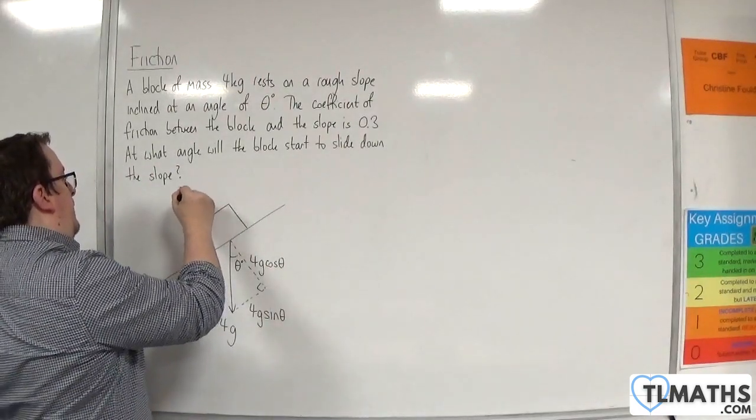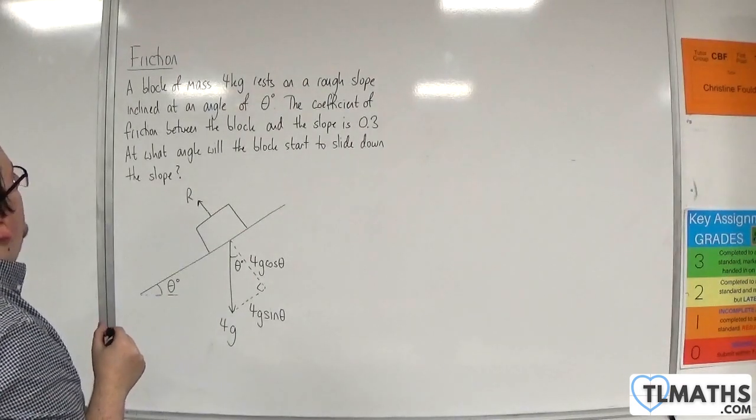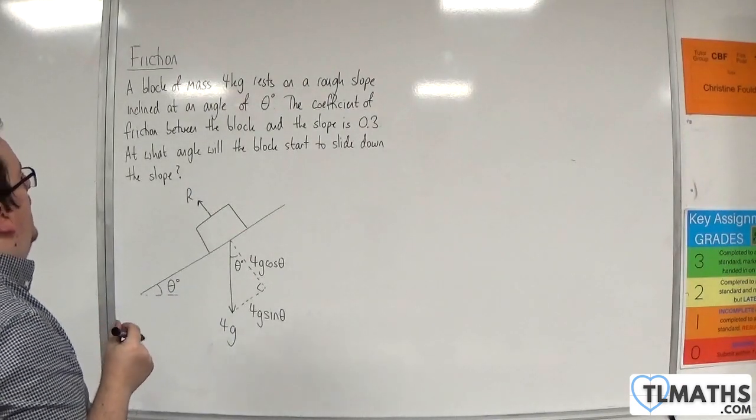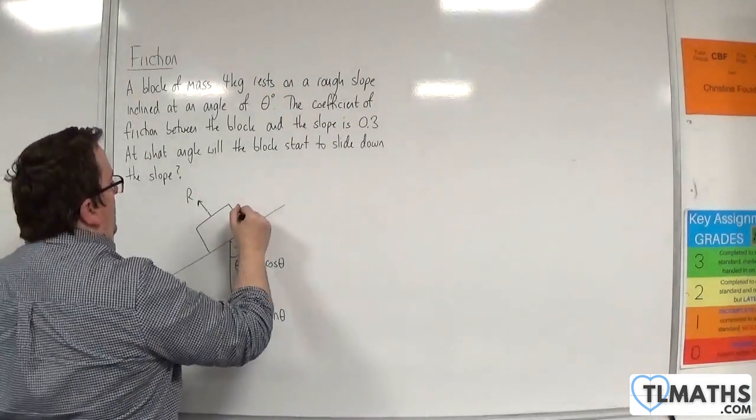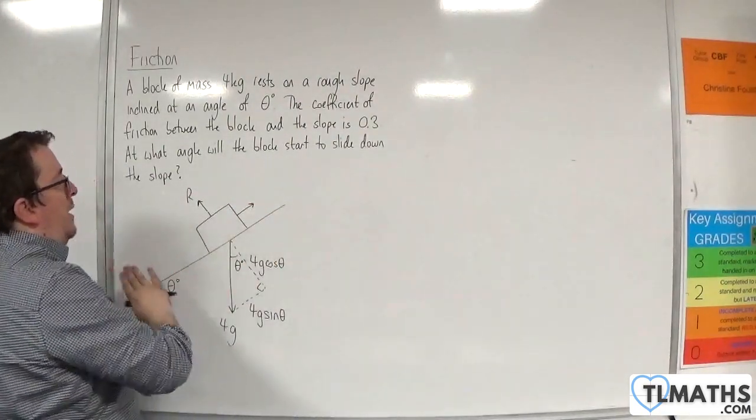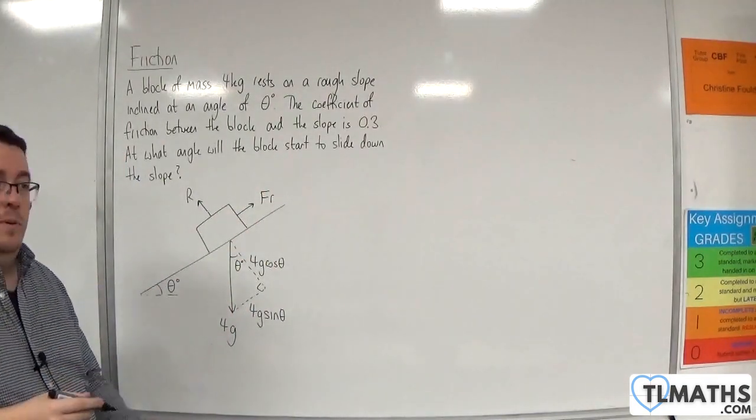Now it's in contact with the surface, so there will be a normal reaction force. Now it rests on a rough slope, so it's trying to slide down the slope. So that means there will be a frictional force working against the direction of motion parallel to the plane.